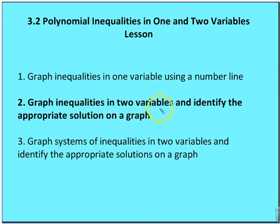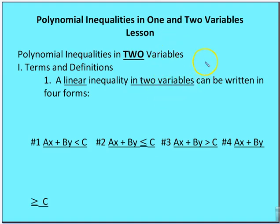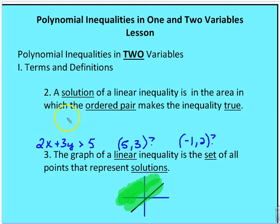Now we want to graph inequalities in two variables and identify the appropriate solution on a graph. A linear inequality in two variables is written just like a linear equation but with an inequality sign — greater than, less than, less than or equal to, or greater than or equal to. For example, 2x plus 3y is greater than 5. The solution to a linear inequality is an area, and any ordered pair in that area is a solution. We represent the area by shading the appropriate side of the boundary line.